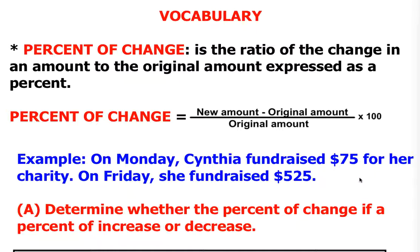Here's your example. On Monday, Cynthia fundraised $75 for her charity. On Friday, she fundraised $525. This was the beginning amount and this is the ending amount.